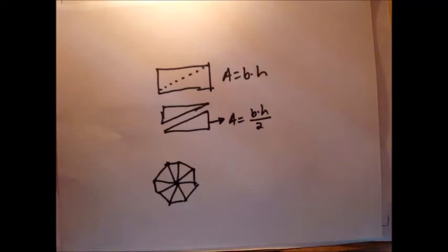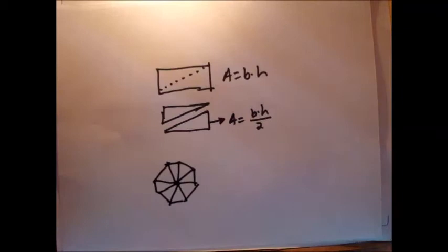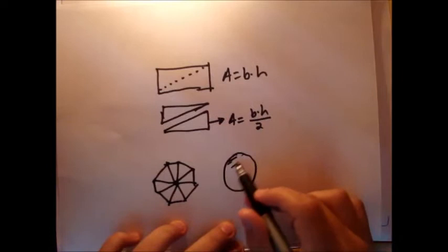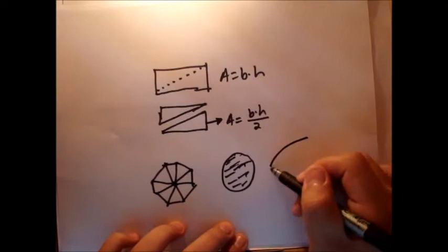But have you ever asked yourself: what about the areas of squiggly lines, things that break the rules of polygons? For example, curves like a circle — finding the exact area under the circle — or a football-like shape. How do you find the area of these?